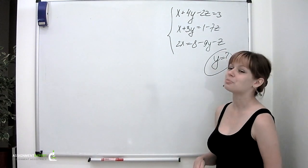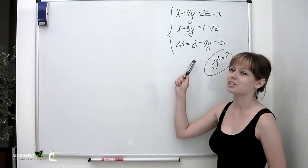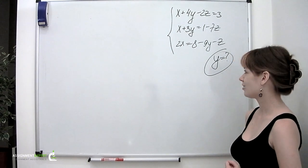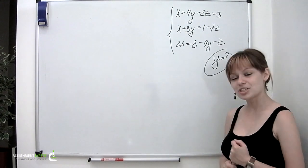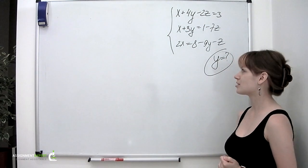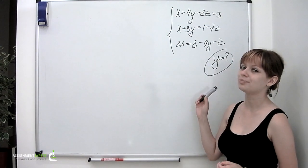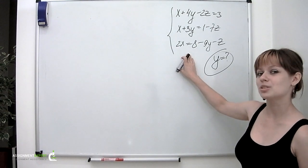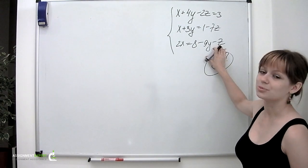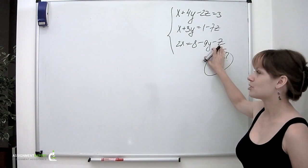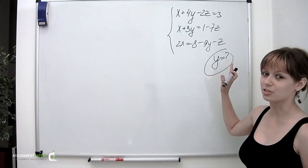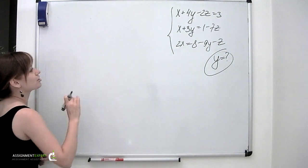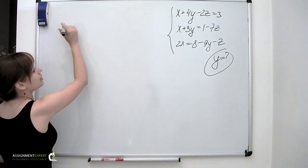The problem Michael is asking about is written down on our blackboard. The first thing to do when solving a system using Cramer's rule is to modify it so that its left-hand side contains variables only, and the right-hand side contains only pure constants. So we'll rearrange our system a little bit.